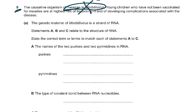The genetic material of morbilli virus is a strand of RNA. RNA and DNA are in your syllabus, that's why I'm talking about this. Statements A, B, and C relate to the structure of RNA. State the correct term or terms to match each of the statements A to C.